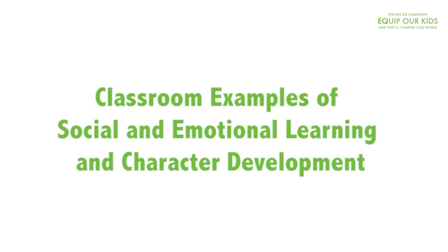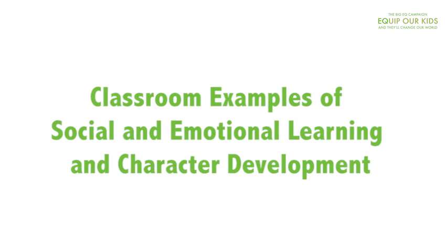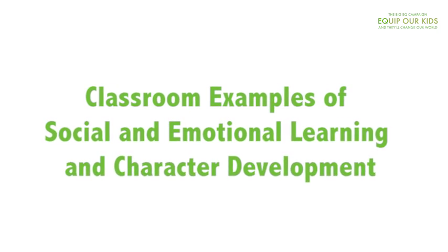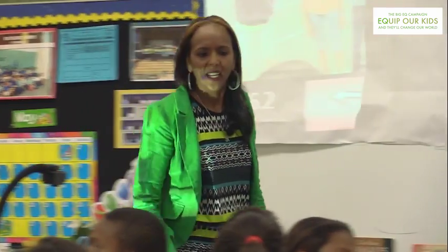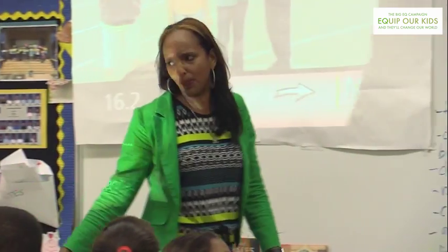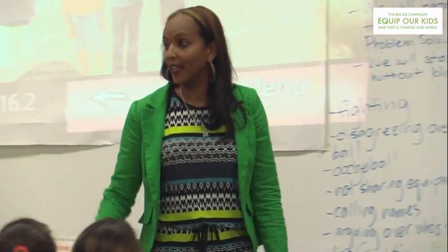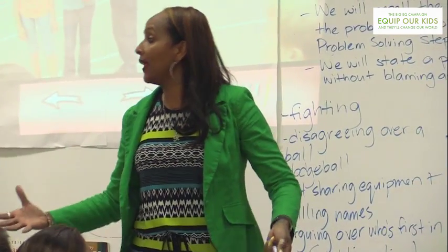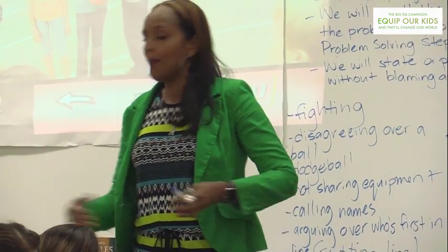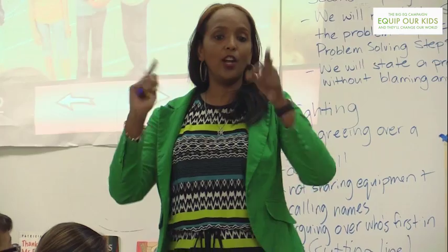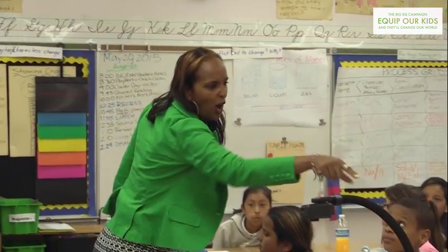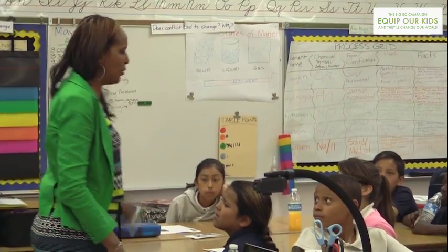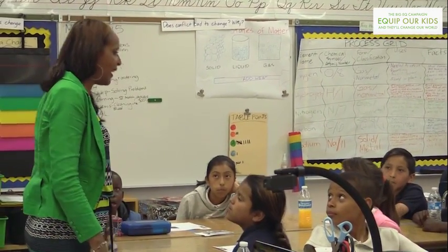When someone blames, they use words like 'you always,' 'it's your fault,' 'you did it,' 'he did it,' 'she did it,' 'he's always bothering me.' That's putting the blame on you. And what does that do when I say, 'you always do that to me,' 'you always say that'?